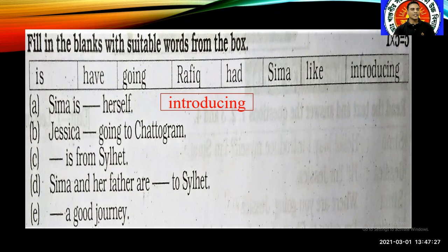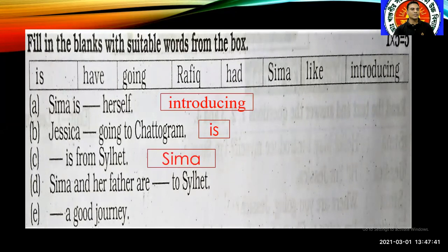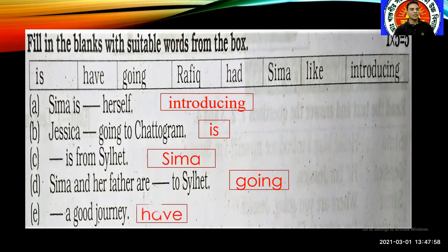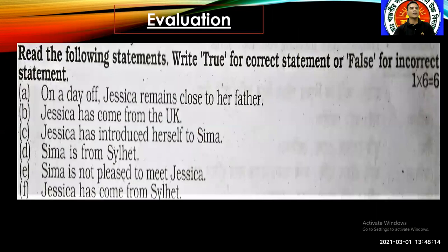B) Jessica ___ going to Chattogram — the answer is 'is.' Jessica is going to Chattogram. C) ___ is from Sylhet — the answer is Shima. Shima is from Sylhet. D) Shima and her father are ___ to Sylhet — the suitable word is 'going.' E) ___ a good journey — the suitable word is 'have.' Have a good journey. In this way, you have to fill in the blanks with suitable words from the box and write your answers in your answer script.